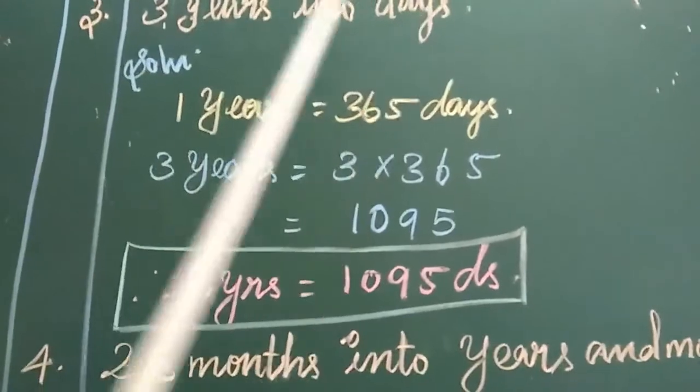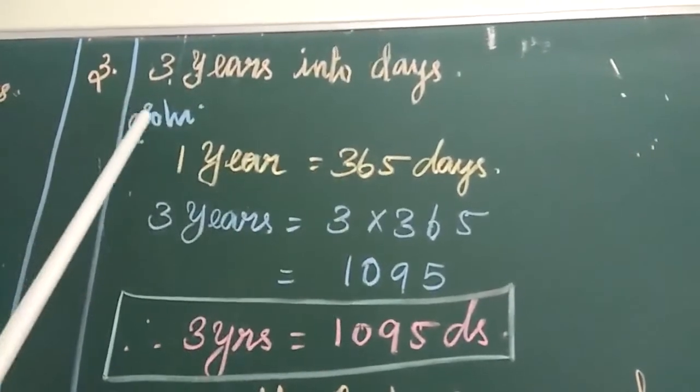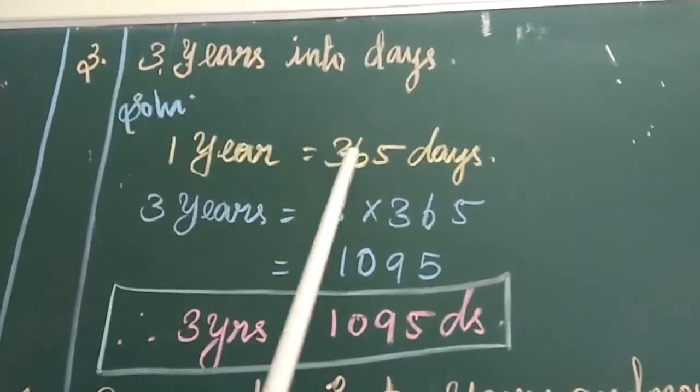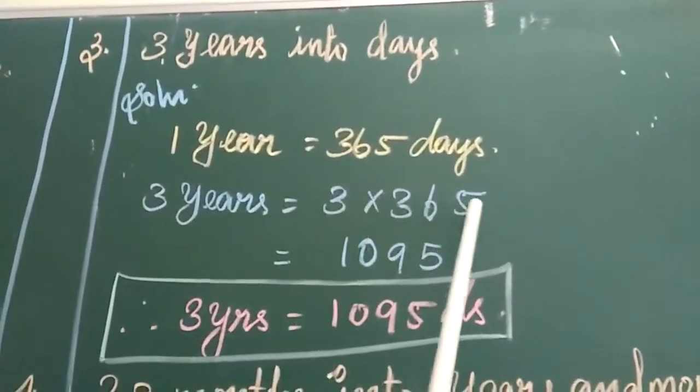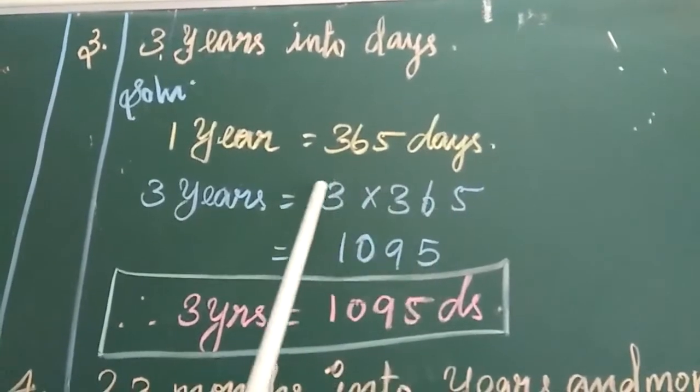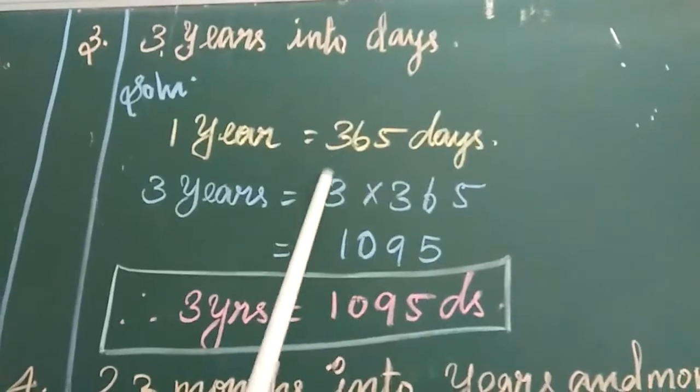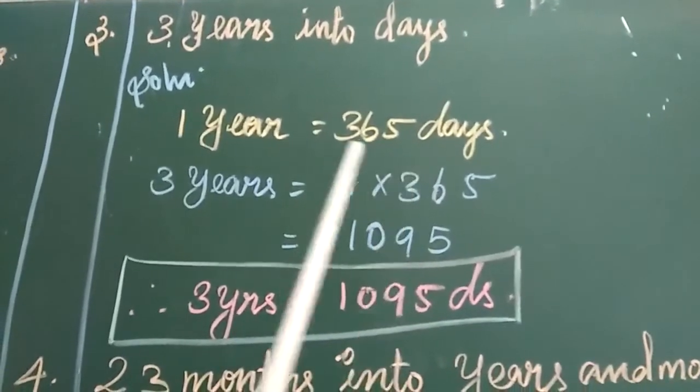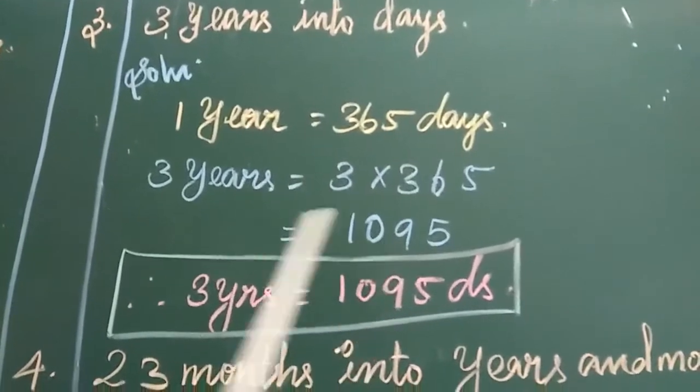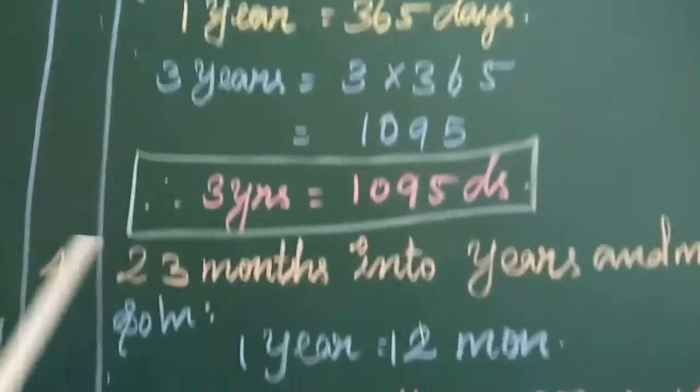3 years into days. Years are big, days are small, big to small, multiply. Solution: 1 year is equal to 365 days. So 3 years is equal to 3 into 365 days. Let's do the multiplication. 3 fives are 15, 5 remaining 1 carried over. 6 threes are 18 plus 1, 19. 9 remaining 1 carried over. 3 threes are 9 plus 1, 10. So 3 years is equal to 1095 days.